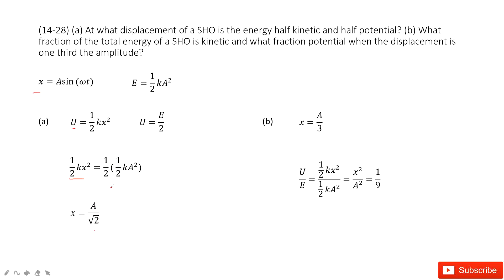The next part is to find the fraction of total energy that is kinetic energy and the fraction that is potential energy when the displacement is one third of the amplitude. We need to find the ratio u to e when x equals A over 3. We can say u is one half k x squared and e is one half k A squared. Taking the ratio, we get x squared over A squared. Substituting x equals A over 3, we get the ratio is 1 over 9.